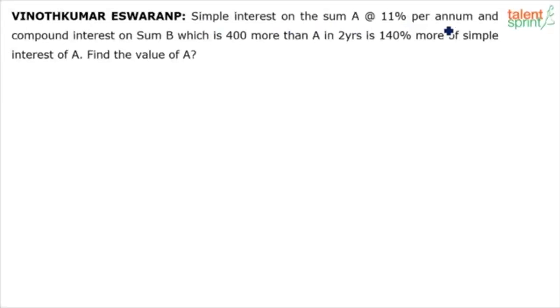Simple interest on the sum A at 11% per annum and compound interest on sum B which is 400 more than A in 2 years is 140% more of simple interest of A. Find the value of A.